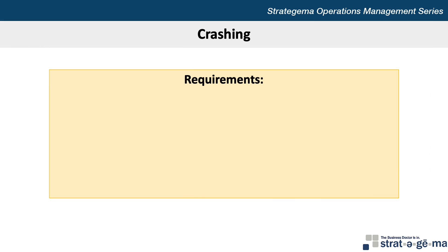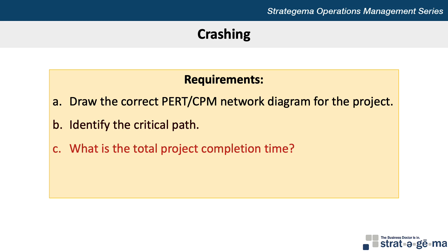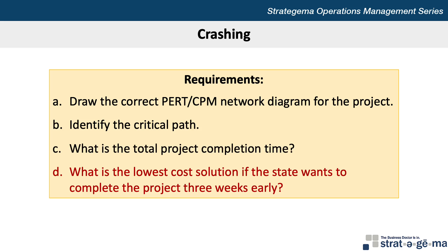There are four requirements for this problem. A: Draw the correct PERT CPM network diagram for the project. B: Identify the critical path. C: Determine the total project completion time. And D: Determine the lowest cost solution if the state wants to complete the project three weeks early.